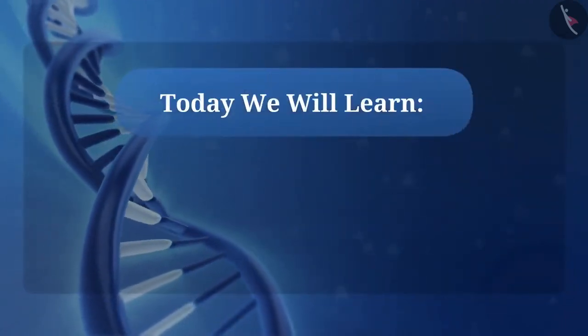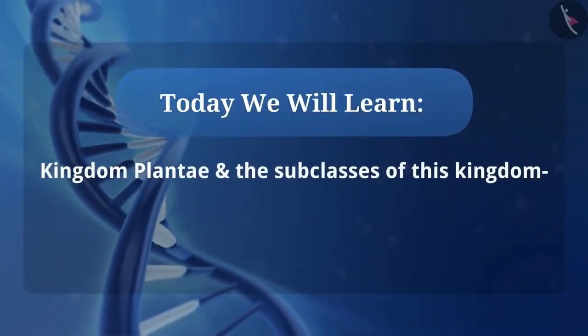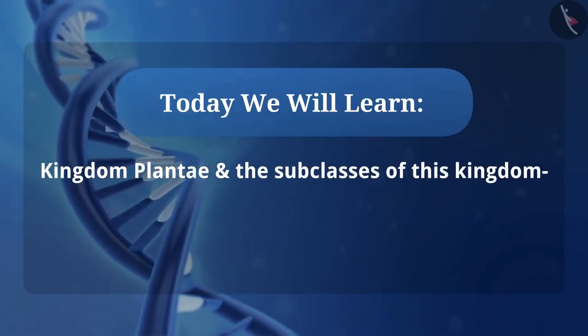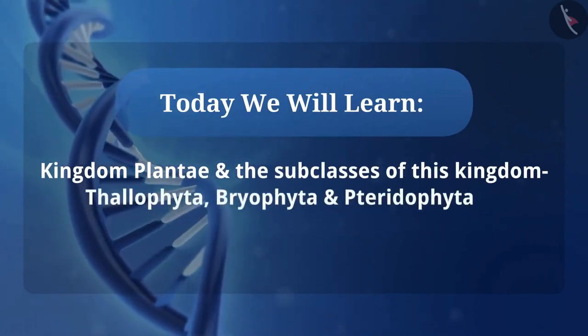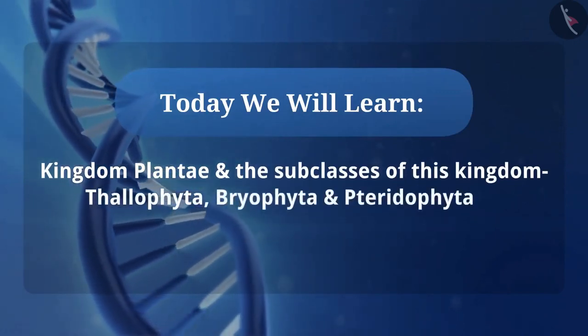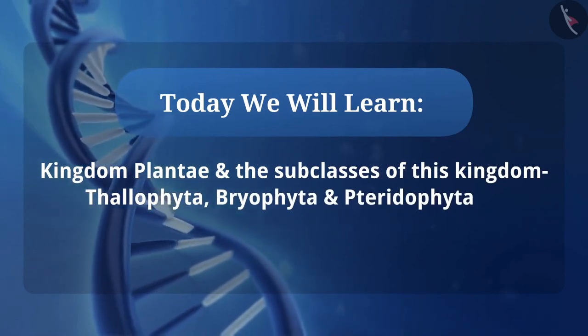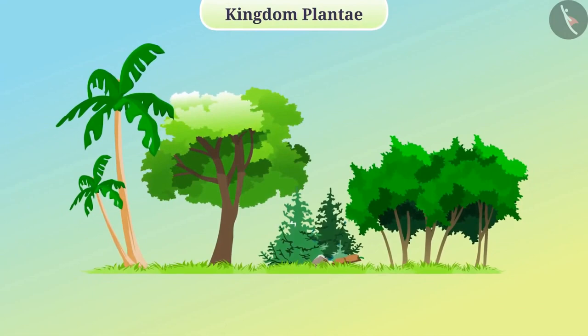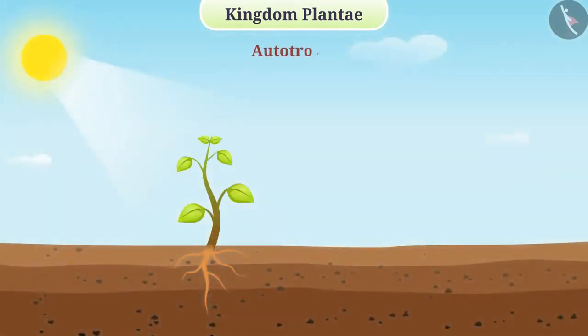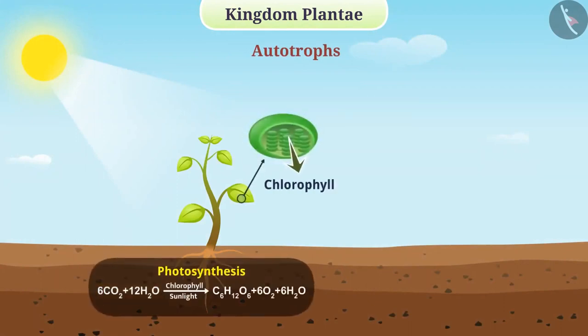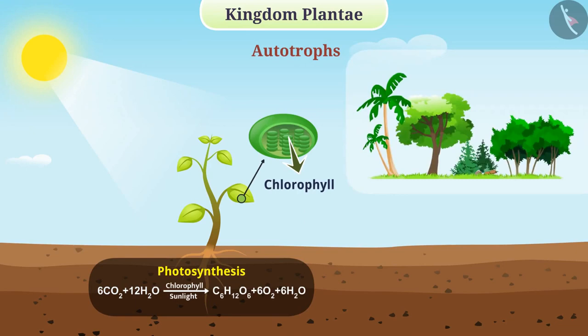Today we will learn about the kingdom plantae and the subclasses of this kingdom: thallophyta, bryophyta and pteridophyta. Let us first discuss the kingdom plantae. Kingdom plantae consists of all autotrophs which perform photosynthesis with the help of chlorophyll and can make their own food. All plants are members of the plantae kingdom.